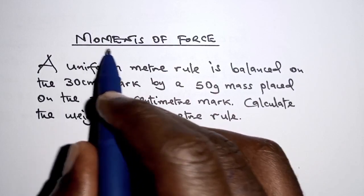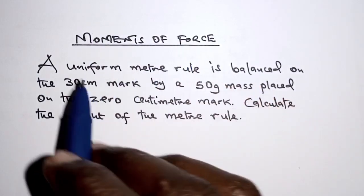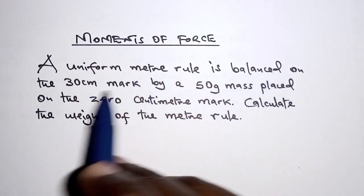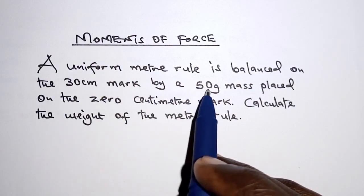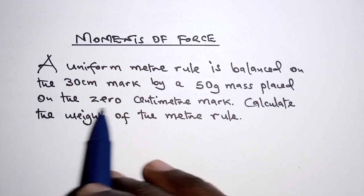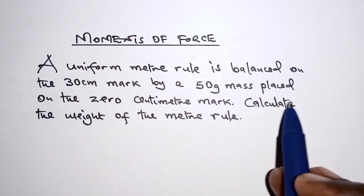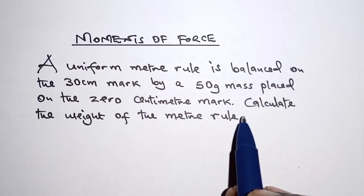Hi, today's question is about moments of force. A uniform meter rule is balanced on the 30 centimeter mark by a 50 gram mass placed on the 0 centimeter mark. Calculate the weight of the meter rule.